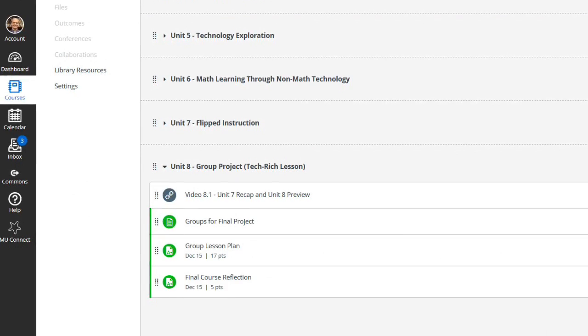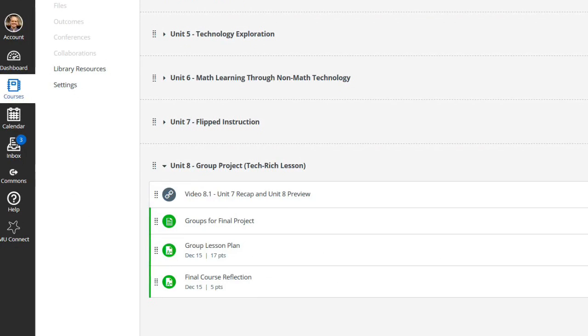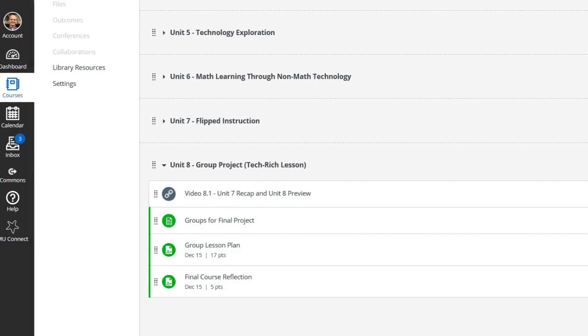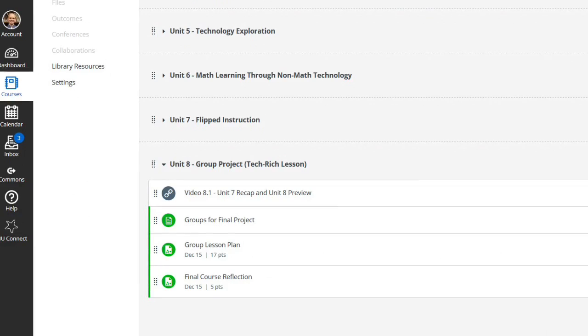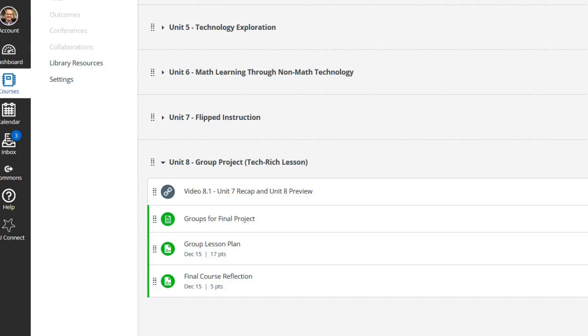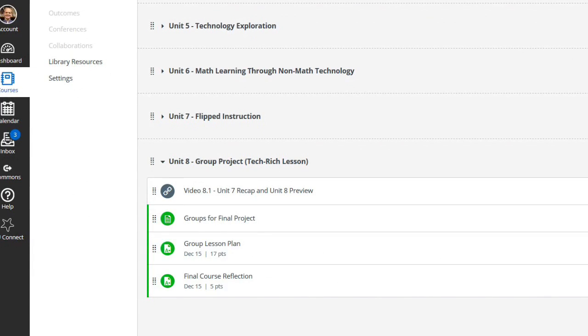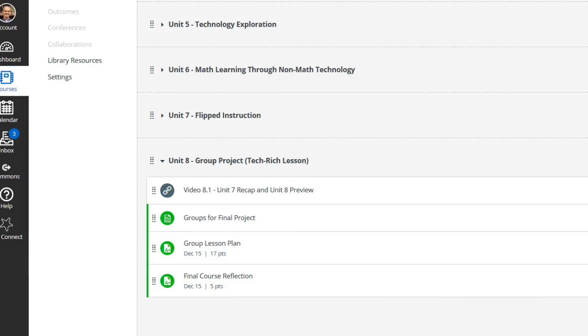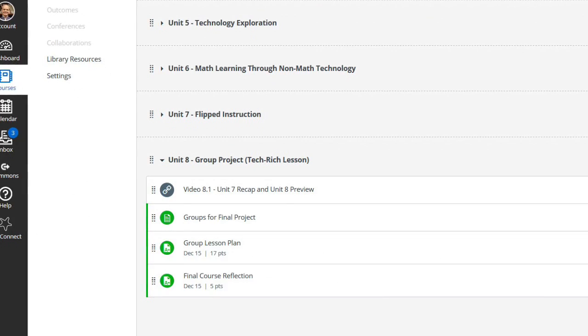You have your group lesson plan where you have some technology incorporated into the lesson plan. And then you have a written reflection about the course and where your thoughts are currently about technology and mathematics education. So it's kind of reflecting back to what we asked you to think about way back in Unit 1 about what your philosophy or what your opinion is on technology and math ed.